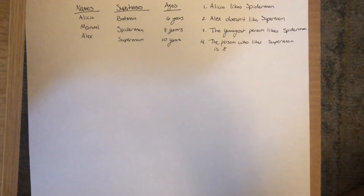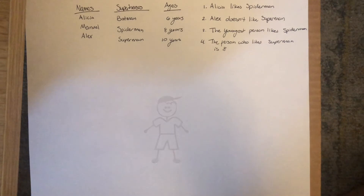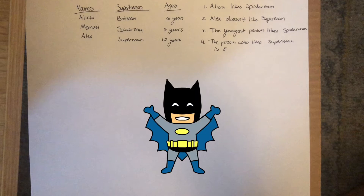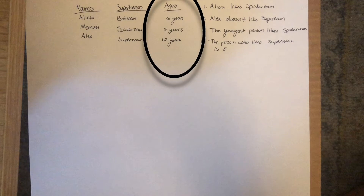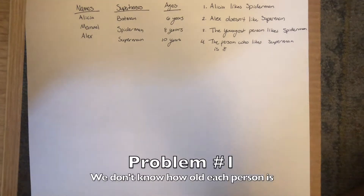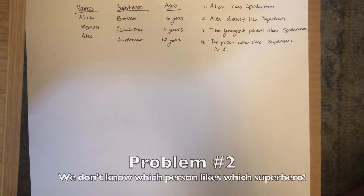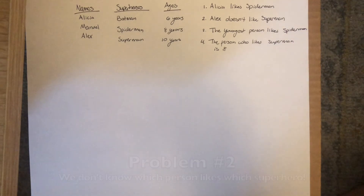Take a look at this question. I have three names: Alicia, Manuel, and Alex. They like three different superheroes — Batman, Spider-Man, and Superman — and these three people have different ages: one is six, one is eight, and one is ten. We don't know how old these people are, and we don't know which person likes which superhero. We're given four clues, and from these clues we're trying to find out which name, superhero, and age are all linked together.